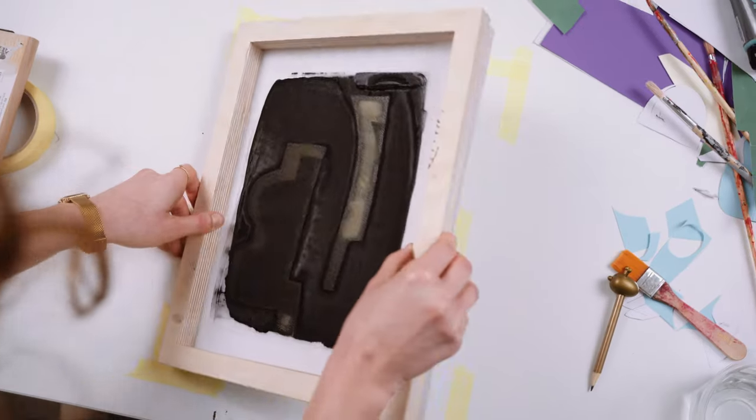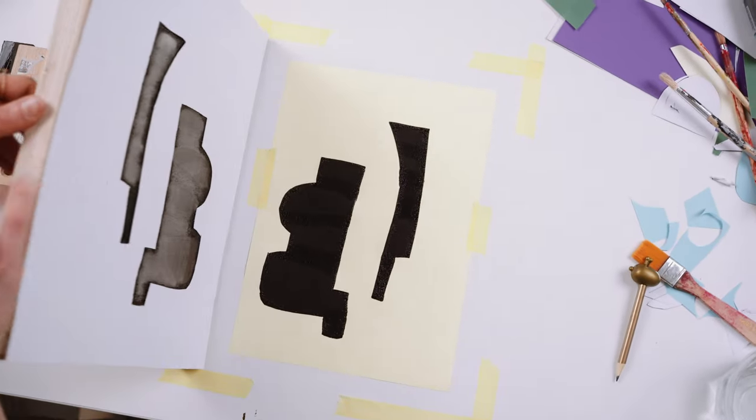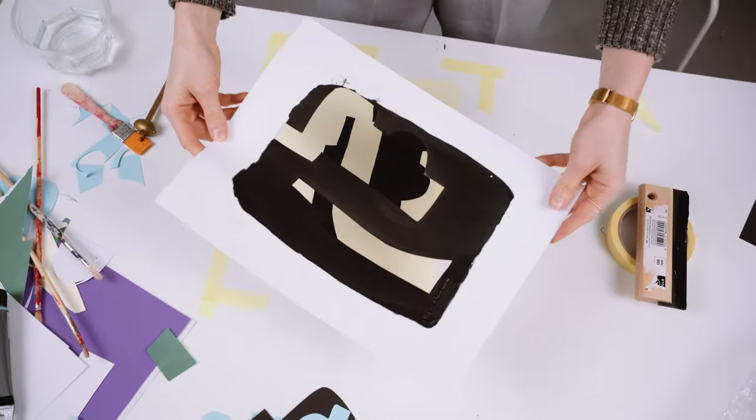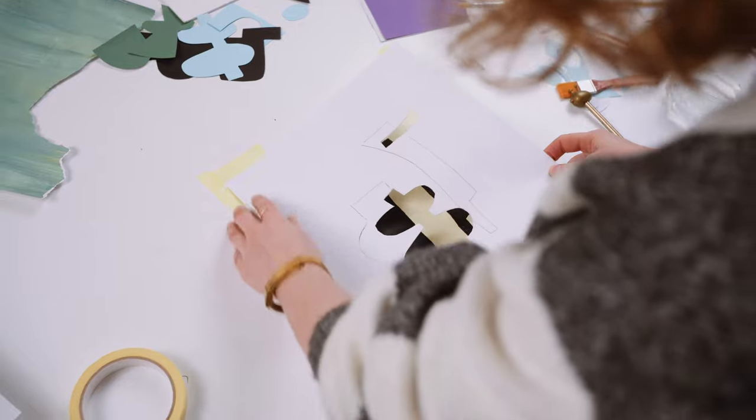Zaczynamy przenoszenie. Używam tylko jednej ramki, więc po każdym odbiciu zmywam z niej farbę i zmieniam szablon.